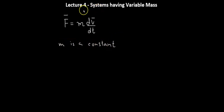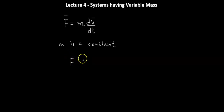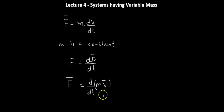Since we are going to consider systems having variable mass, the mass will not be constant — it will be a function of time. In that case, we cannot use that particular form of Newton's second law. The actual definition of Newton's law is that force is proportional to the rate of change of momentum, dp vector over dt, where momentum is given by p equals m times v vector. This is the form we'll use to write our equations of motion today.